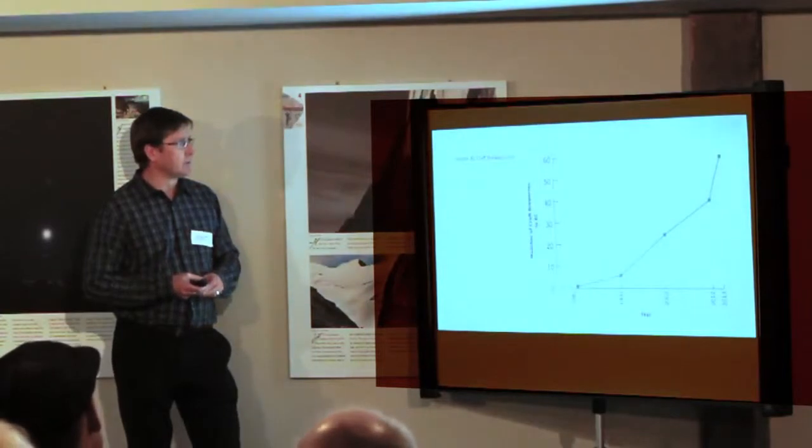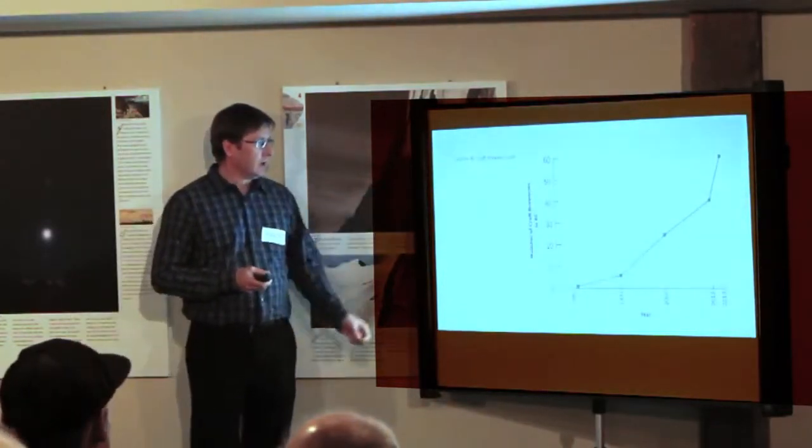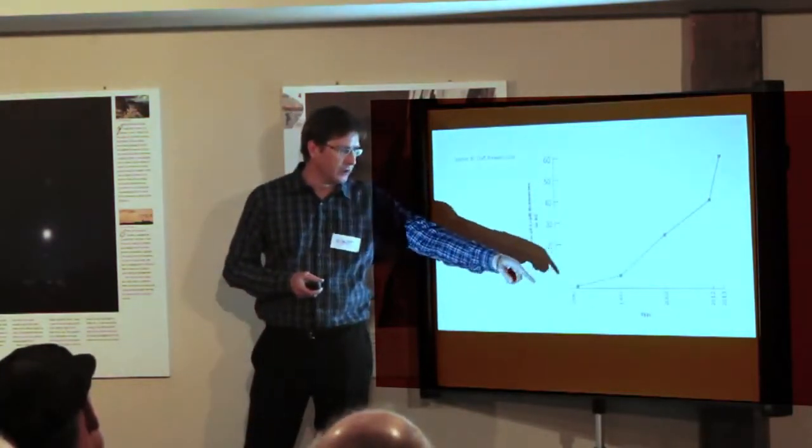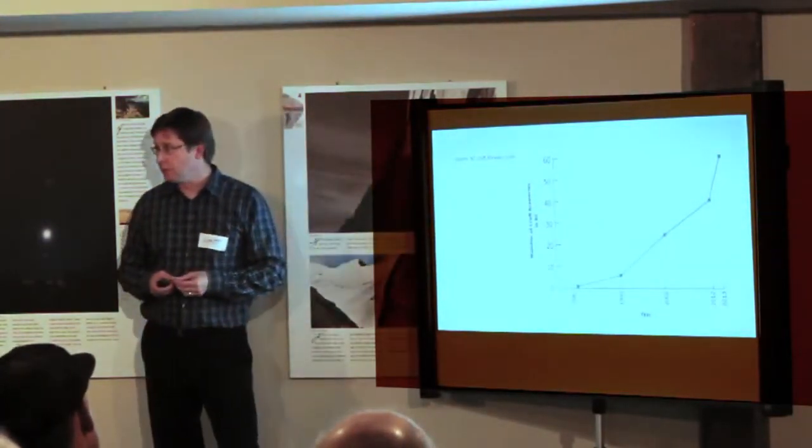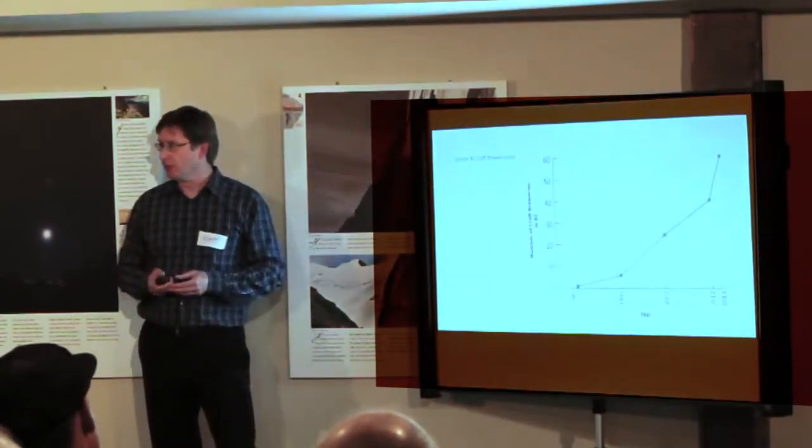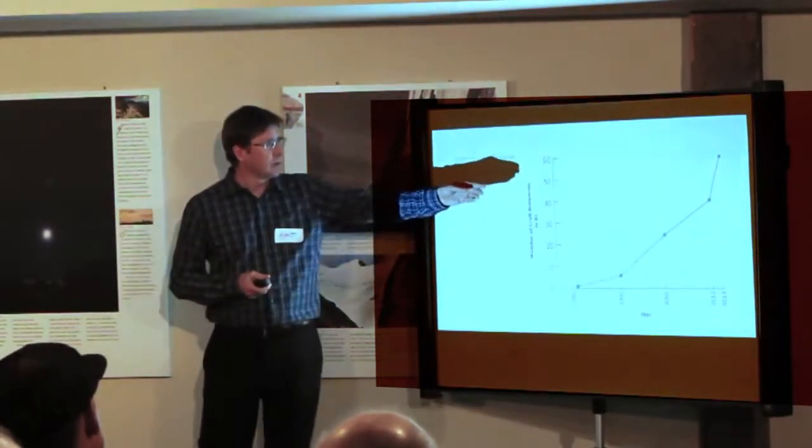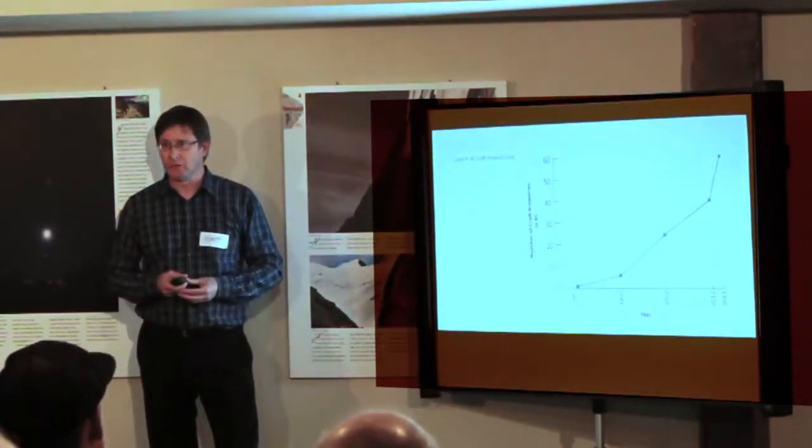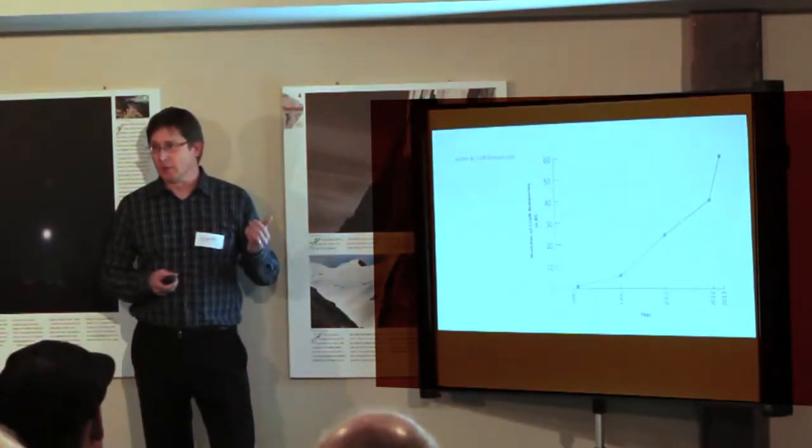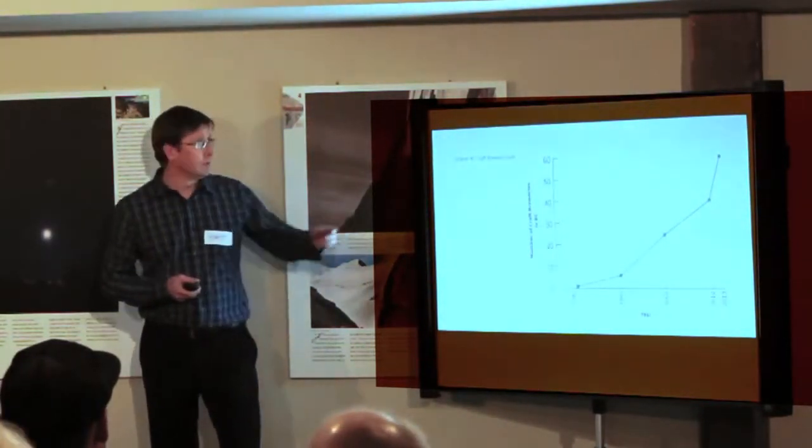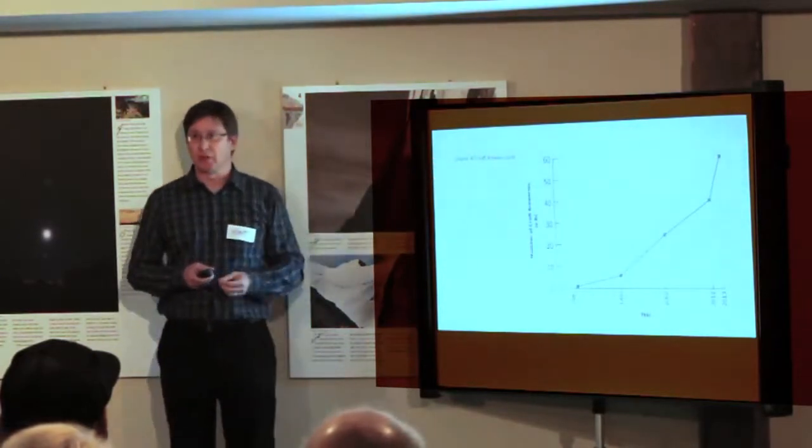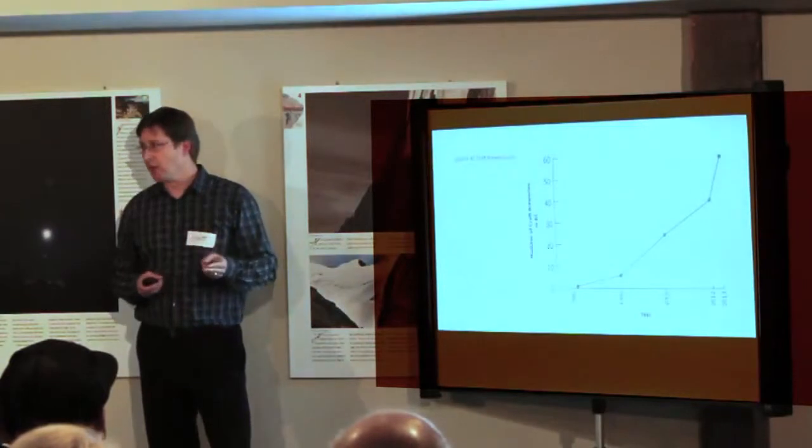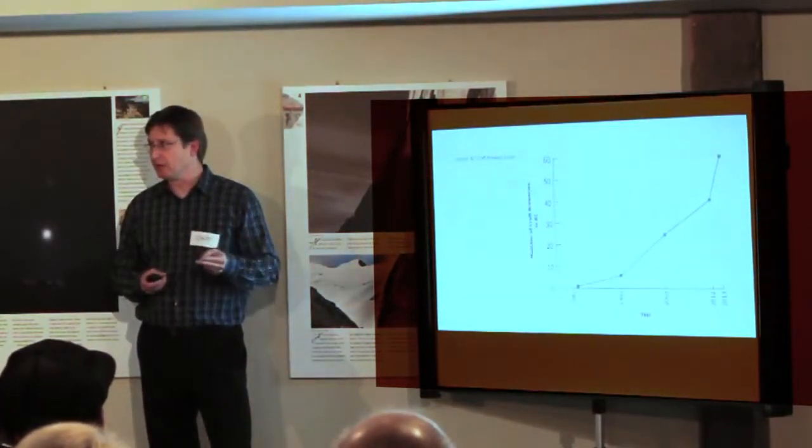This is a really interesting graph from the BC Craft Brewers Guild. It shows the number of breweries on the y-axis versus year. And you can see that prior to 1982, there were no craft breweries in BC. Fast forward up to 2013, you can see that 60 craft breweries existed in BC. The BC Craft Brewers Guild is actually predicting we're going to hit 100 craft breweries in BC in two years, and they know that because there's about 20 new breweries on the books for next year.